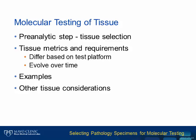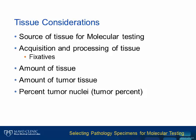We will review a number of examples and touch on a number of additional tissue considerations. There are a number of details to keep in mind about tissue when selecting tissue for further molecular testing: the source of the tissue, how it is collected and processed, including what fixative is used, the total amount of tissue, the amount of tumor in that tissue, and the percent tumor nuclei. We will discuss each in more detail in a few slides.